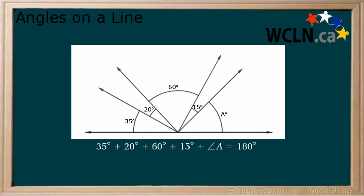Now solve for angle A by subtracting all of the known angles from both sides. This gives us angle A equals 50 degrees.